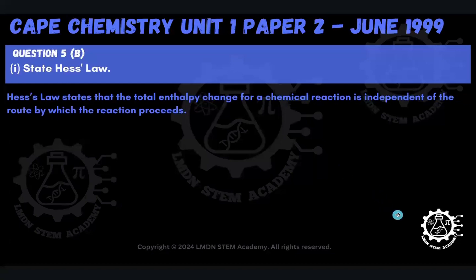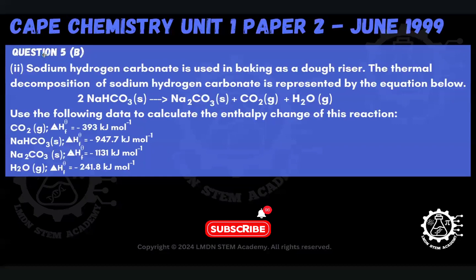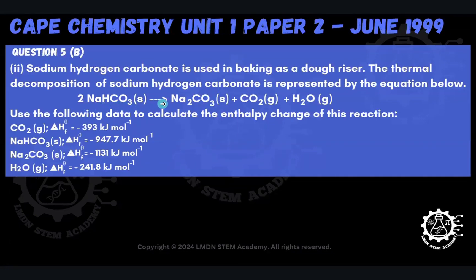Moving on now to part 2, which is a calculation in which we're going to have to use Hess's Law. Part 2 says that sodium hydrogen carbonate is used in baking as a deodorizer. The thermal decomposition of sodium hydrogen carbonate is represented by the equation: 2 moles of sodium hydrogen carbonate solid decomposes into 1 mole of sodium carbonate solid, plus 1 mole of carbon dioxide gas, and 1 mole of steam. The question asks us to use the following data to calculate the enthalpy change for this reaction.